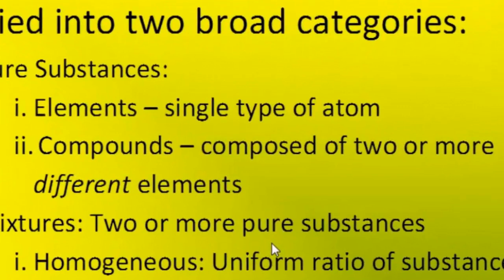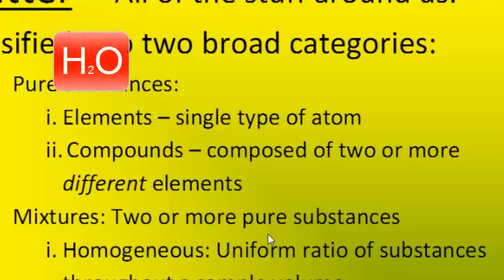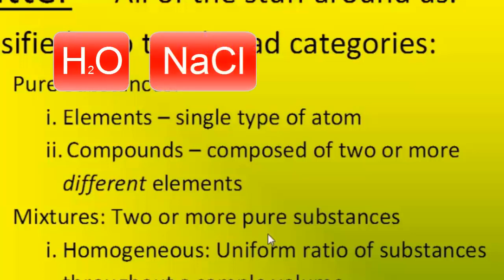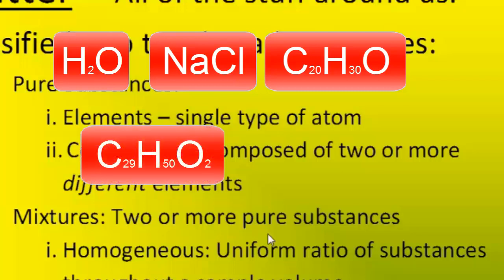Compounds are solids, liquids, and gases that are composed of two or more different types of elements in a fixed ratio. Some examples of compounds are pure water, pure sodium chloride — sometimes called salt — vitamin A, vitamin E, and all of the individual B vitamins.